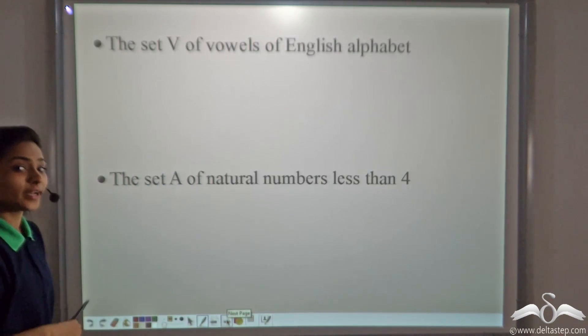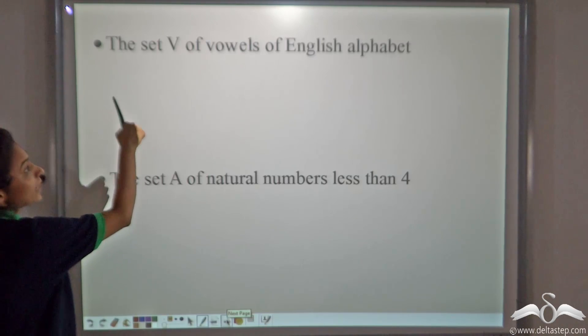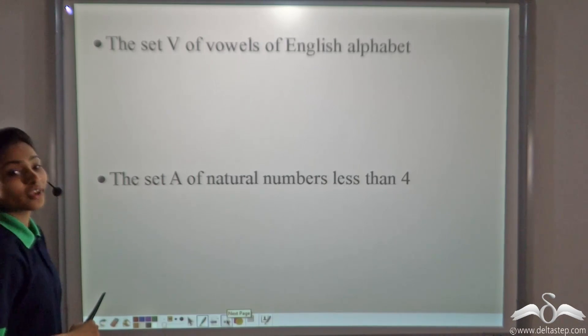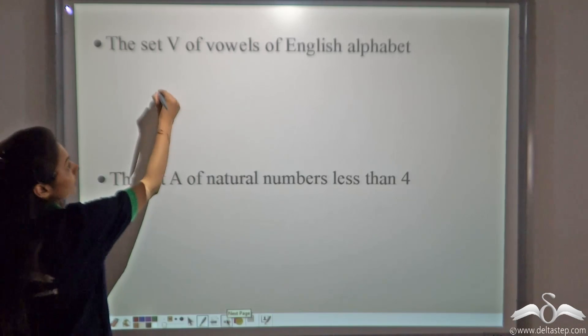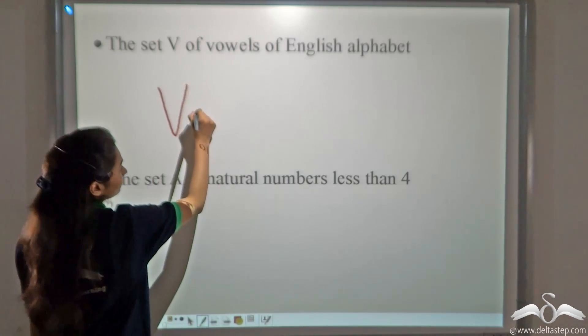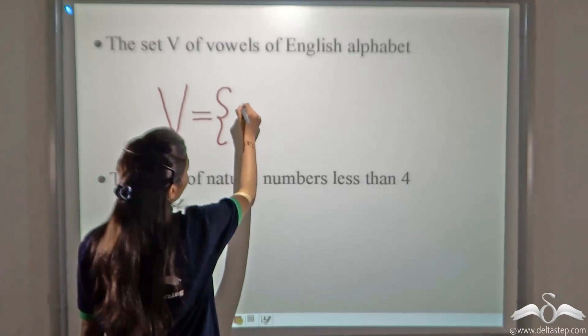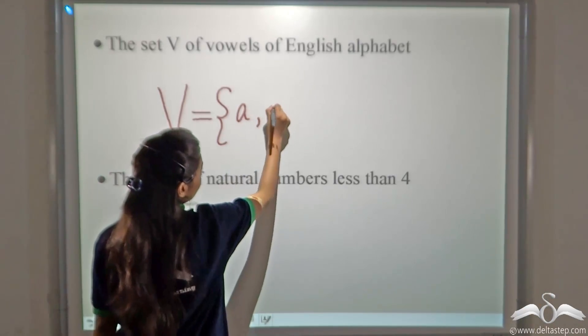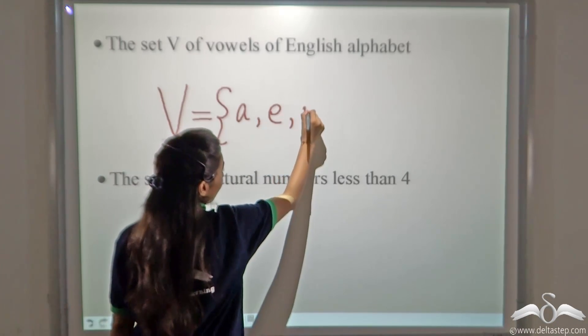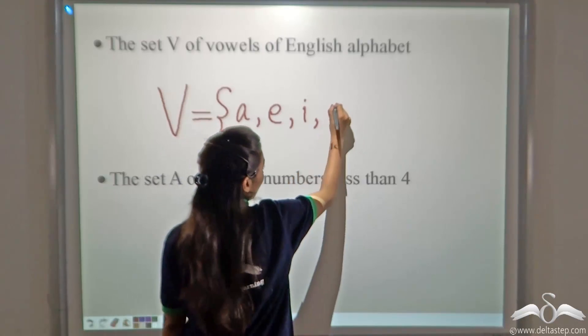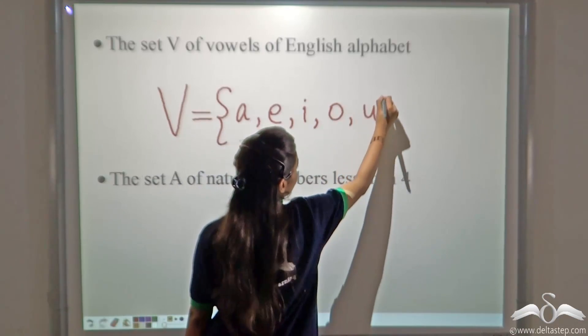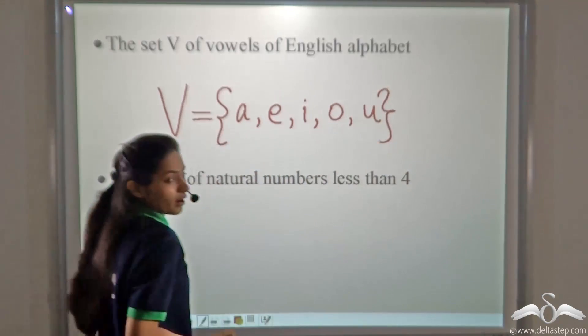Now, let's try writing roster form. The set V of vowels of English alphabet. How will we write it? Take the capital letter V is equal to A, E, I, O, U and we close the bracket. So, this is our answer.